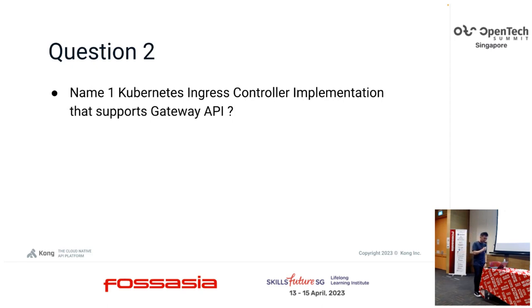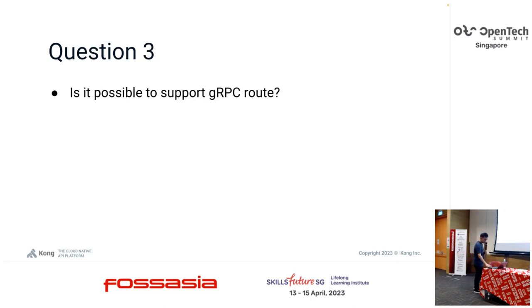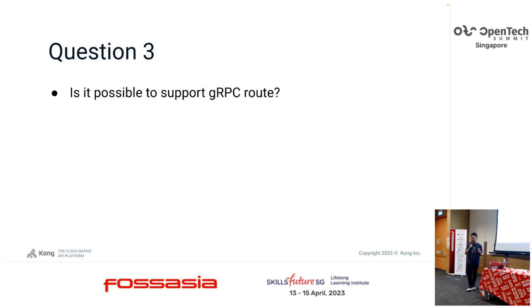Last question: is it possible to support gRPC route? Raise your hand - yes, gentleman, correct! Typically Kubernetes ingress is over HTTP route, maybe with some TCP flavors, but eventually you want to support more modern protocol routing like gRPC so you can support your new use cases.